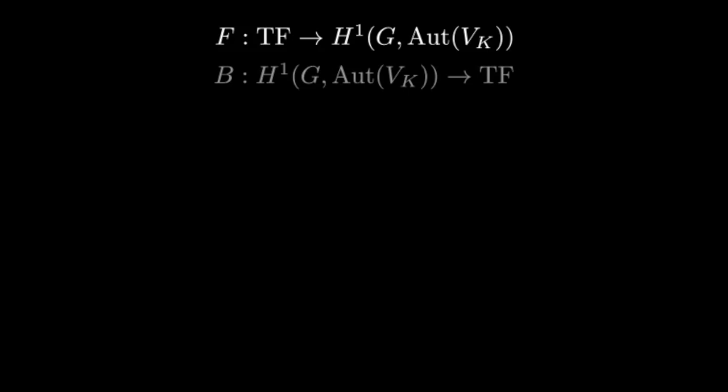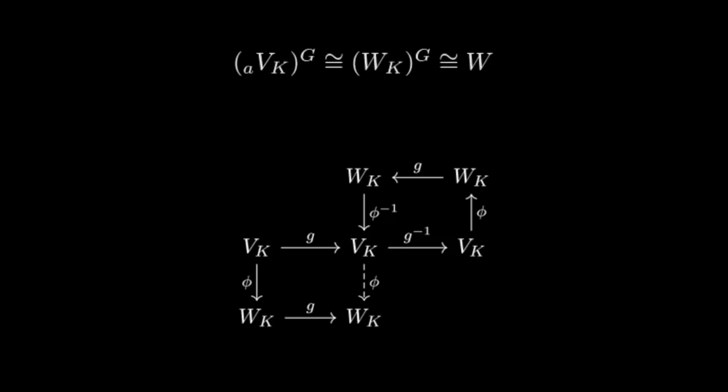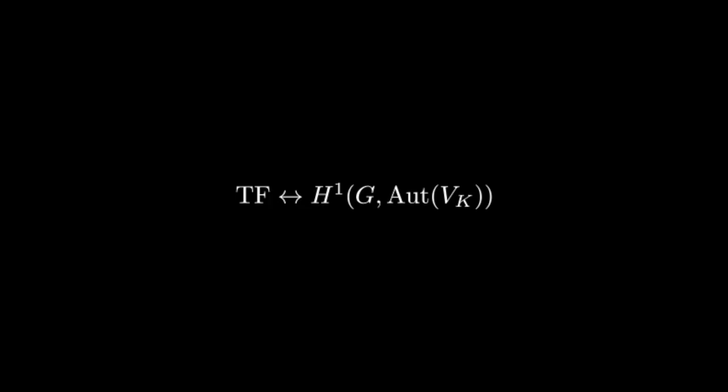So what happens is we've defined a map from twisted forms to H^1, but is this really an inverse to the other one? Well, let W be a twisted form, and consider the following diagram. We've discussed the twisting going on up top as a G-action, and the one on the bottom is as well, by assumption. This diagram then shows, looking at the bottom left square, that there is a G-equivariant isomorphism from a_V_K to W_K. This allows us to use Galois descent to descend to an isomorphism of F-vector spaces. So indeed, b is an inverse. Thus, there's a bijection between twisted forms and H^1.